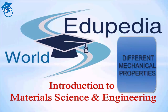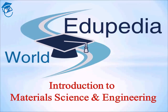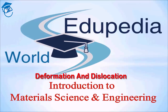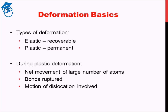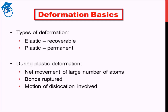In previous sets of lectures we discussed about the different mechanical properties. Today we'll start a new topic — we will discuss about deformation and dislocation. Deformation is of two types: one is known as elastic deformation and another is called plastic deformation.